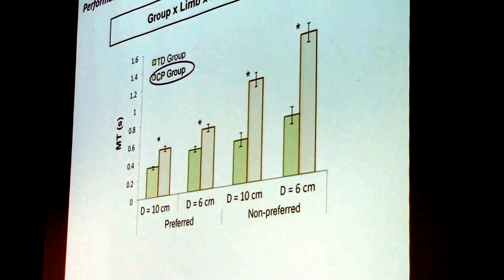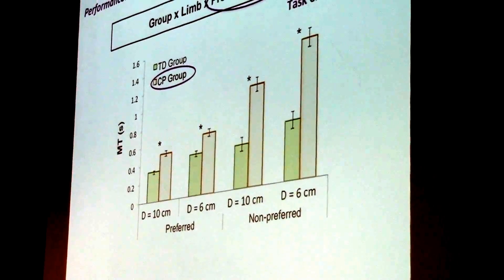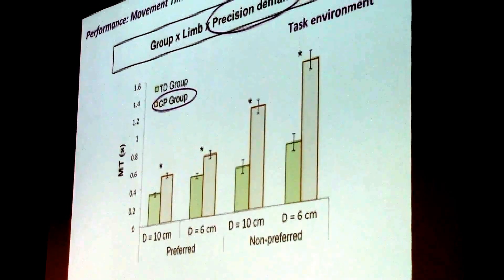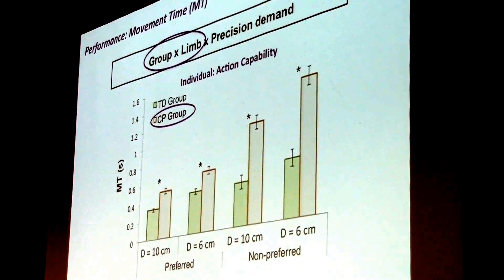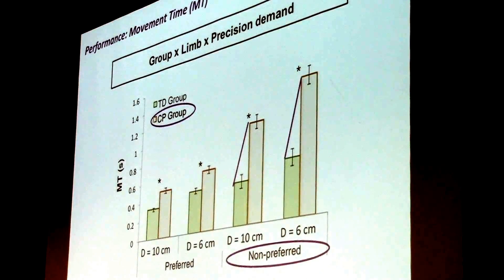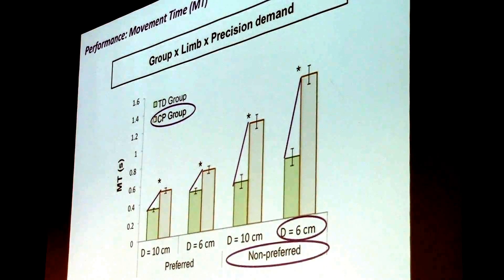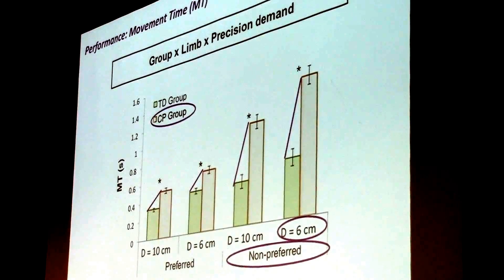But it was not context independent. We had a group limb precision demand interaction. There was an interaction between task environment factors and individual action capabilities, such that differences were larger with the non-preferred hand, in particular when the task was very hard. So that's where the largest differences showed up.